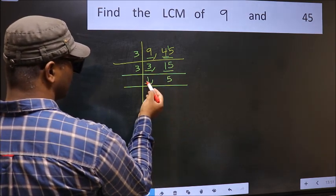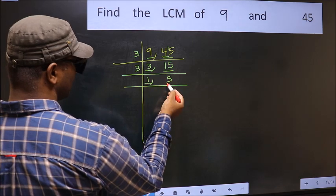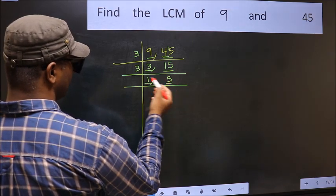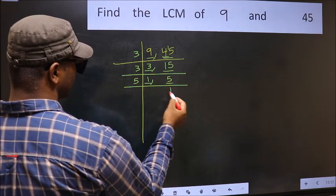Now we got 1 here, so focus on the next number, 5. 5 is a prime number, so 5 times 1 is 5.